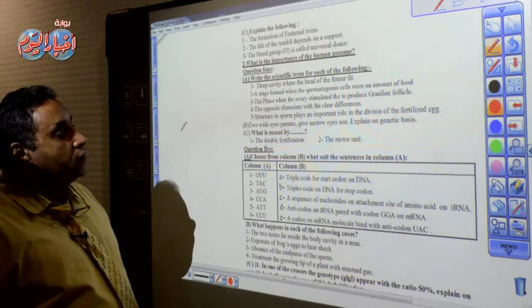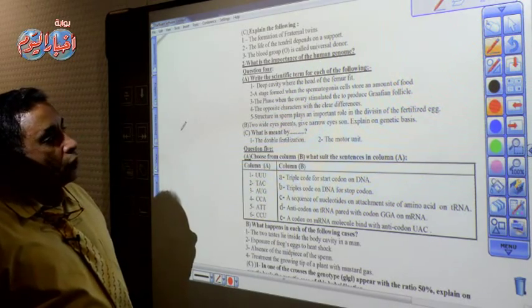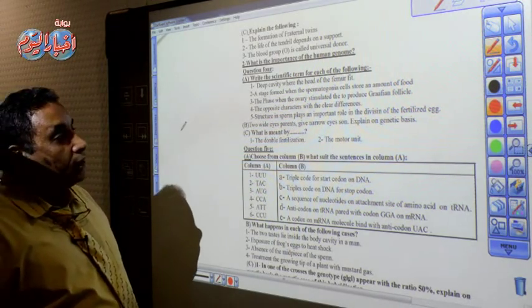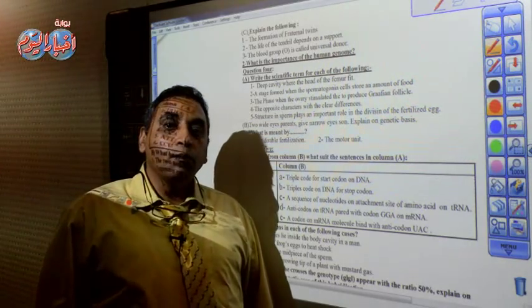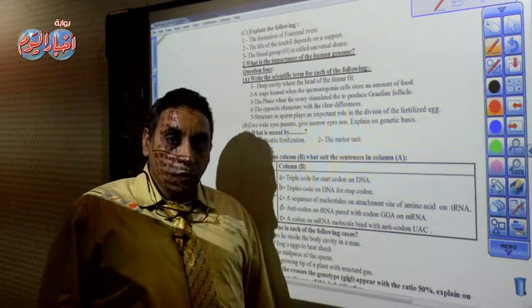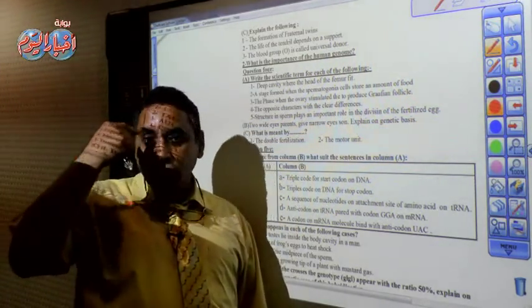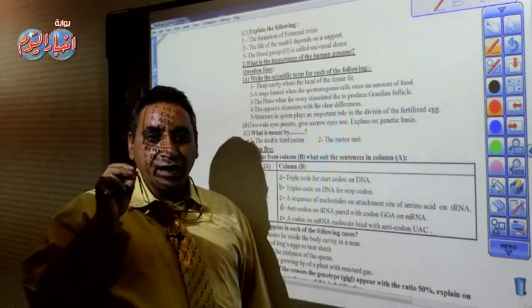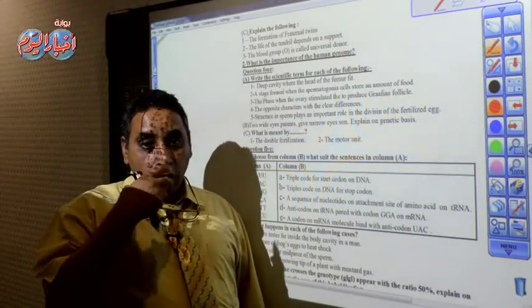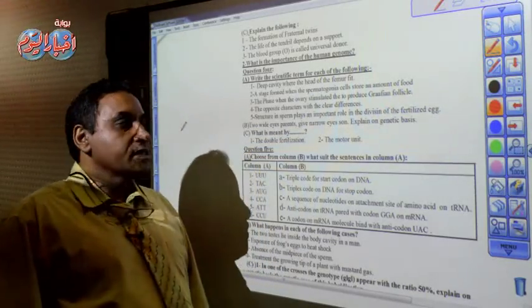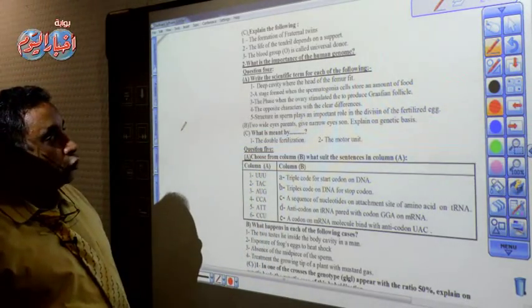Number three: the phase when the ovary is stimulated to produce Graafian follicle. That's the first phase which is called the proliferation phase, where the pituitary gland or the anterior lobe of pituitary gland secretes FSH hormone which stimulates the ovary to form Graafian follicles that are responsible for the secretion of estrogen hormone.